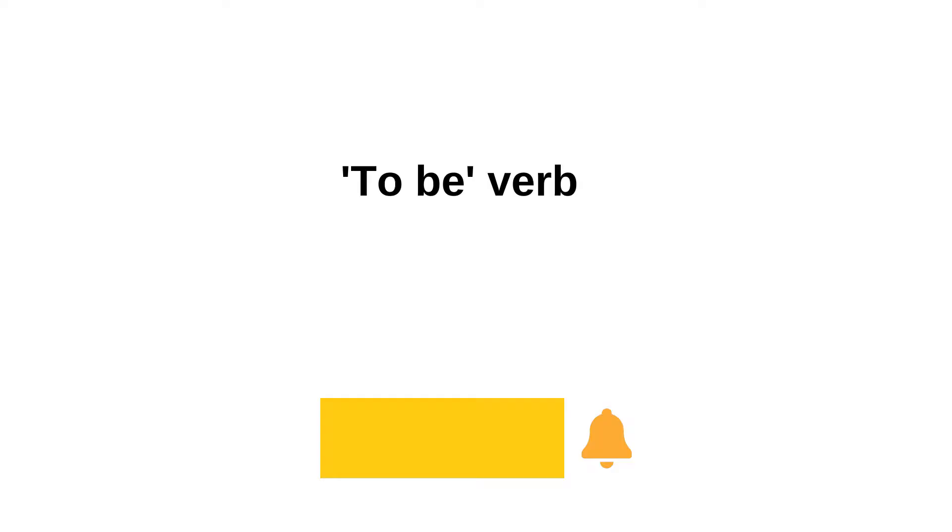And do you remember that almost every sentence in English has to have a verb? I am Danny and this is Malvika. She is a dancer and we are from Kolkata. She was in Delhi while my parents and I were at home. Okay Malvika, you can go now.